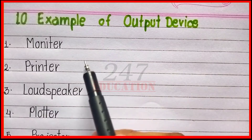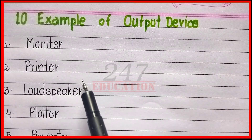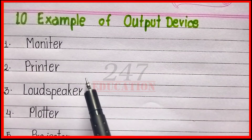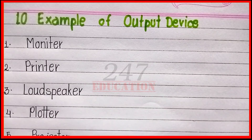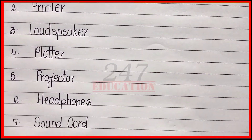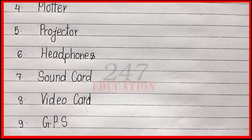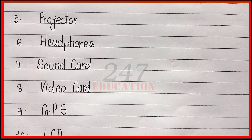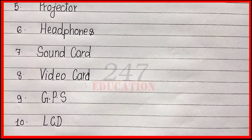To recap: first example of output device is monitor, second is printer, third is loudspeaker, fourth is plotter, fifth is projector, sixth is headphones, seventh is sound card, eighth is video card, ninth is GPS, and tenth is LCD.